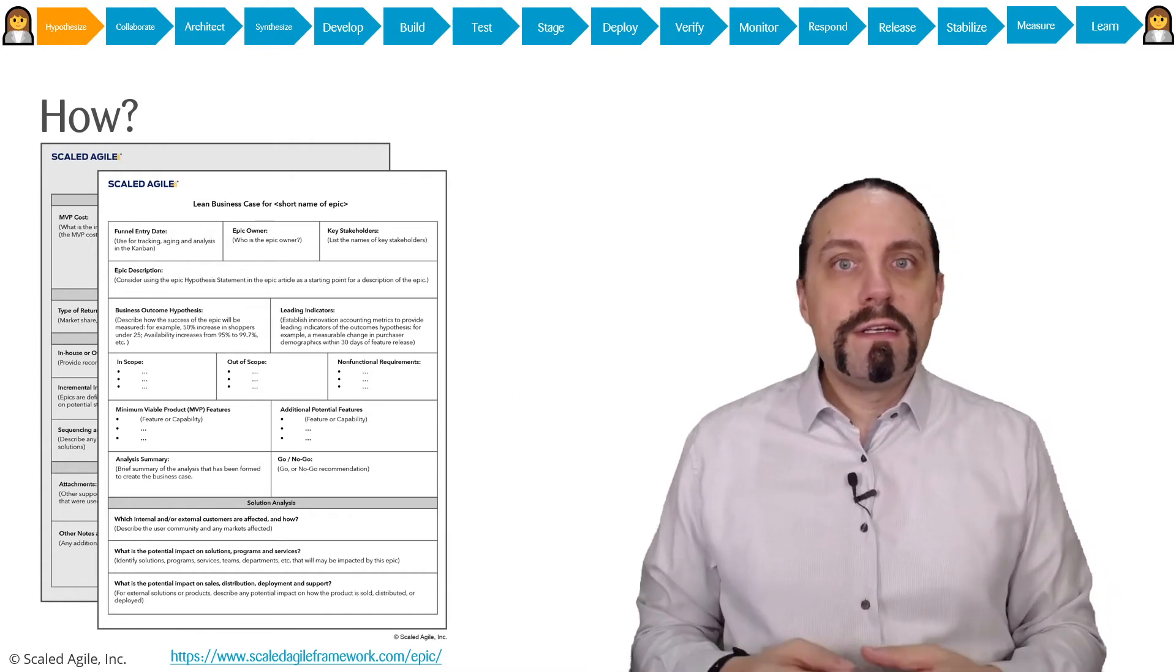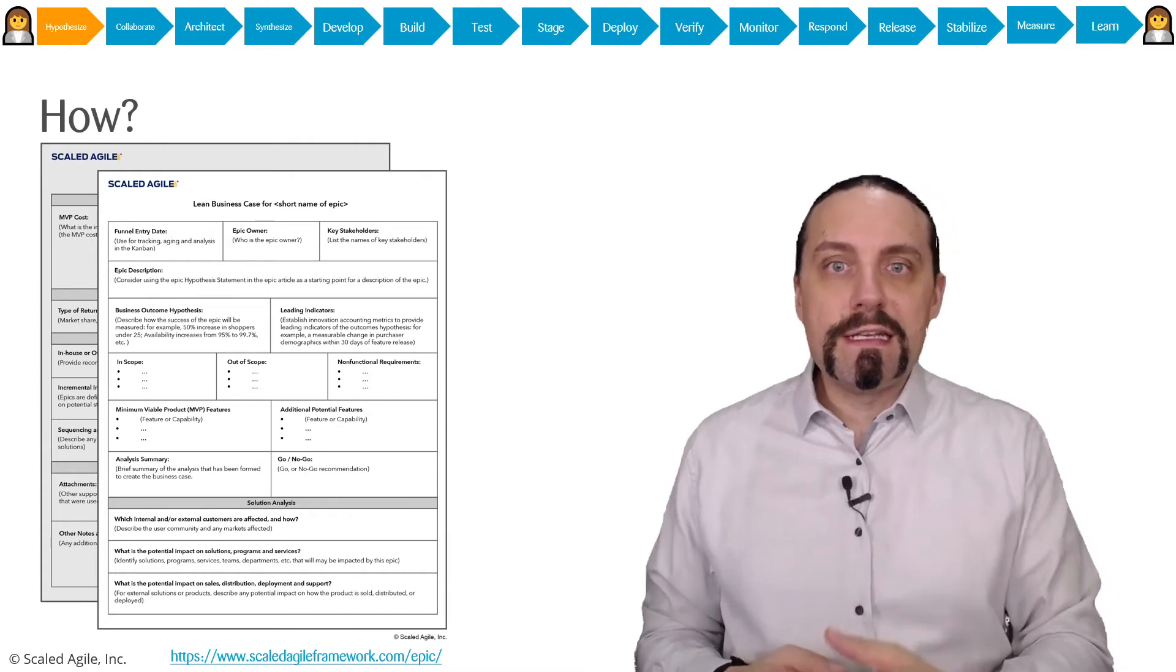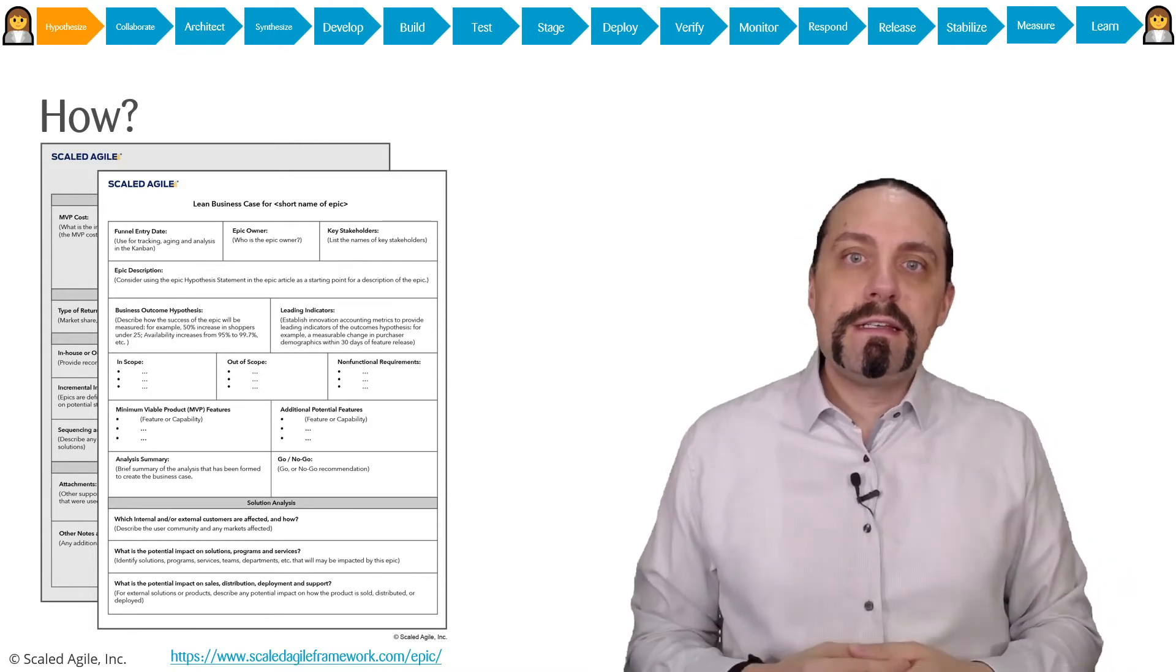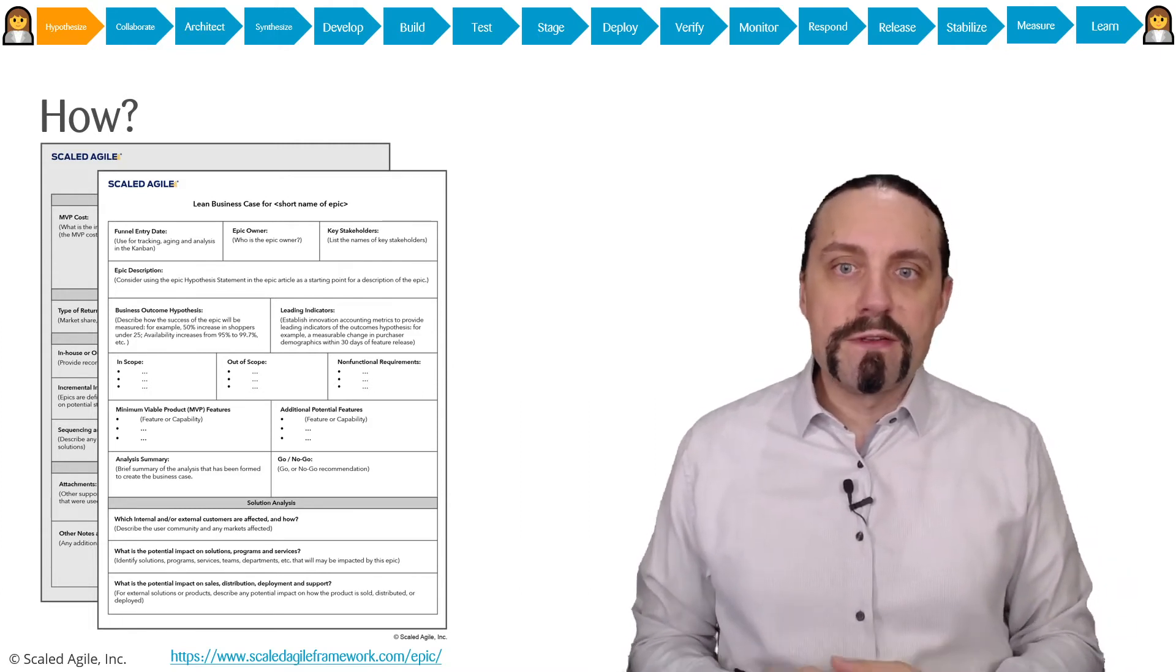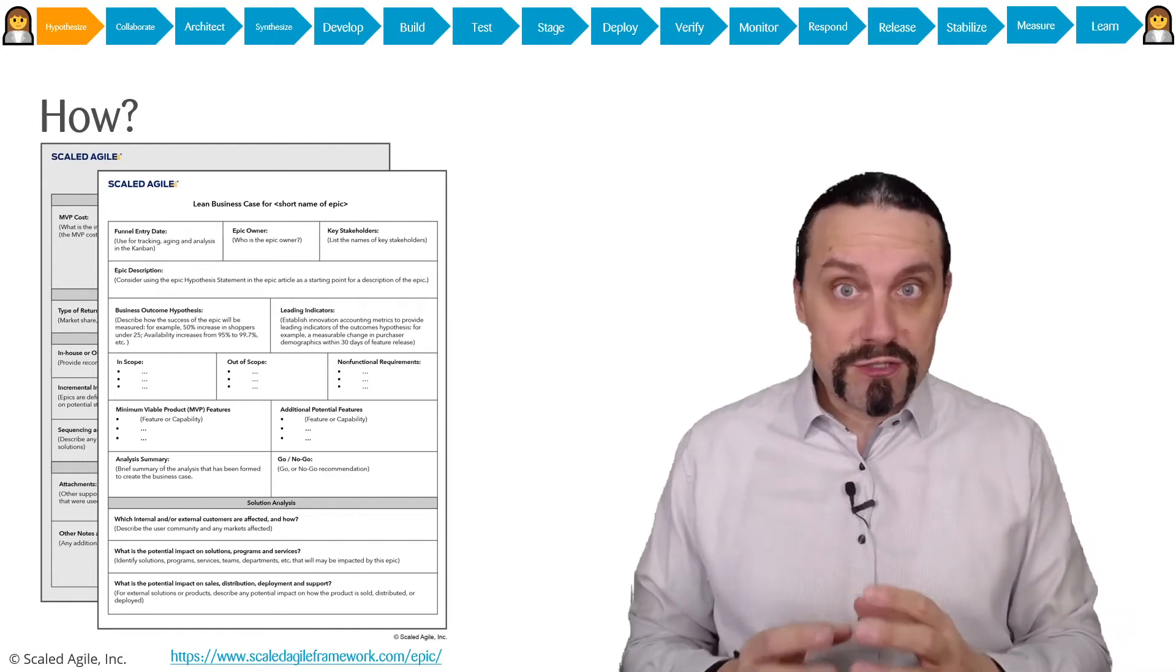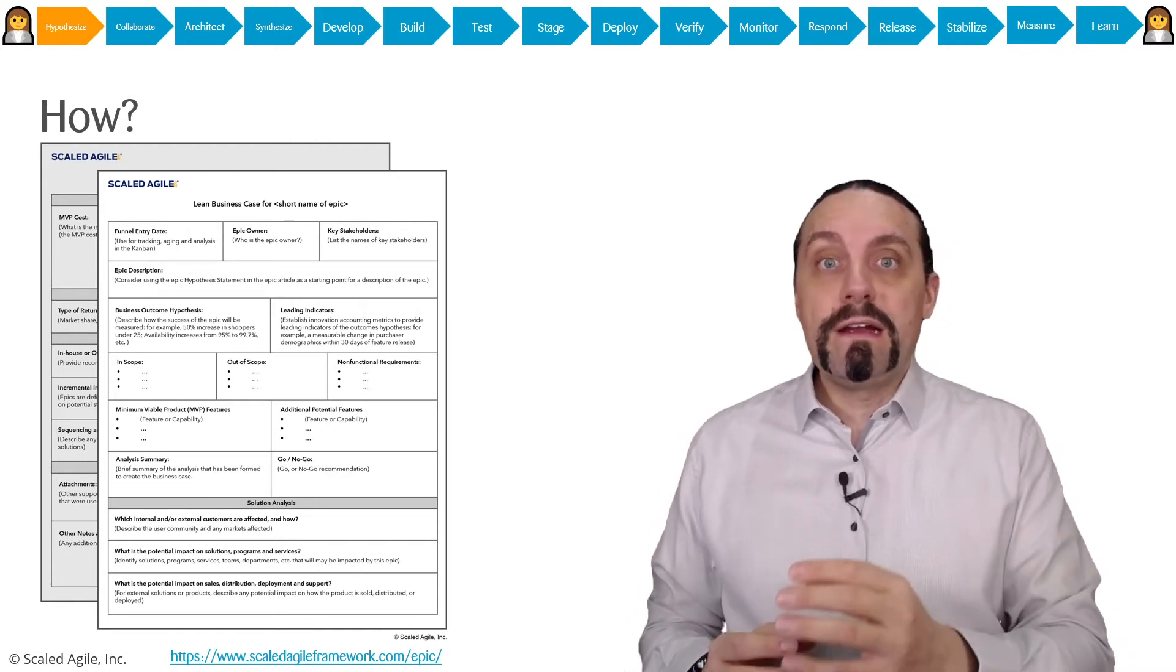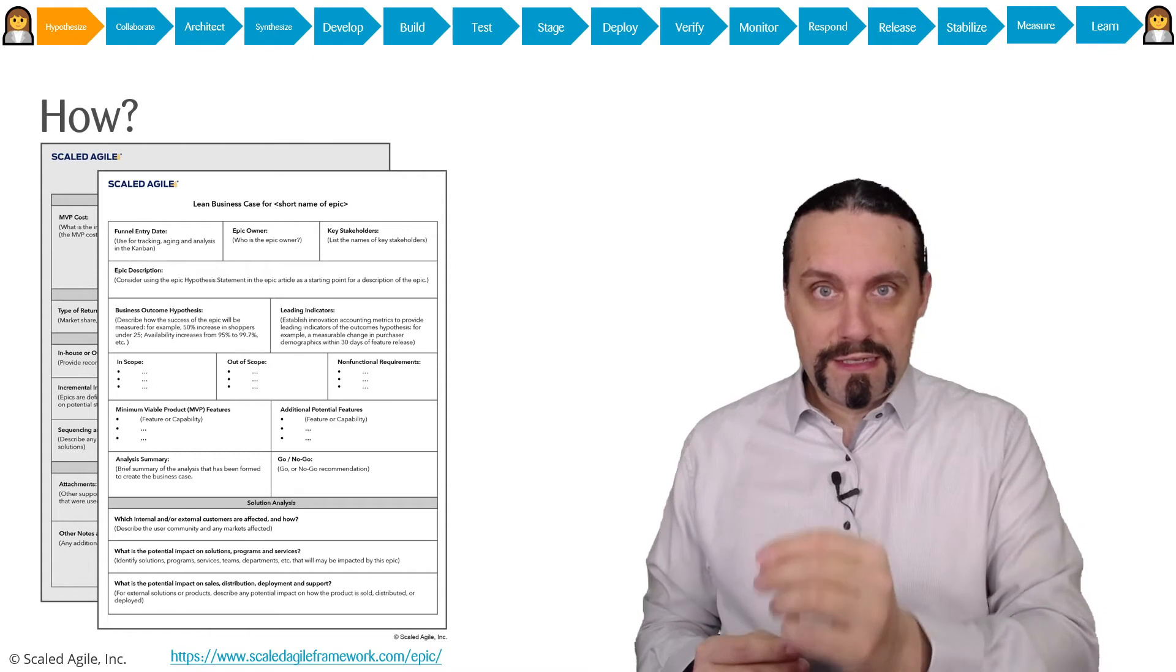After we have created the epic hypothesis statement we know what the hypothesis is. What we now need to do is to create this lean business case. This is a two-pager which we will fill out. And in this two pages which is very important.